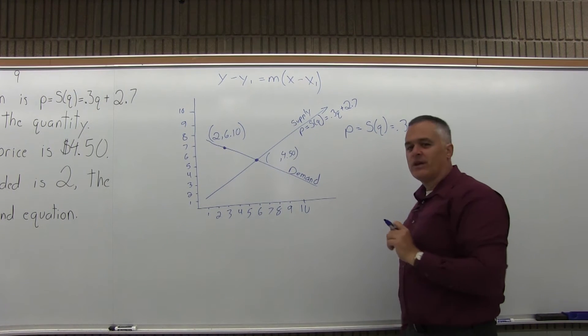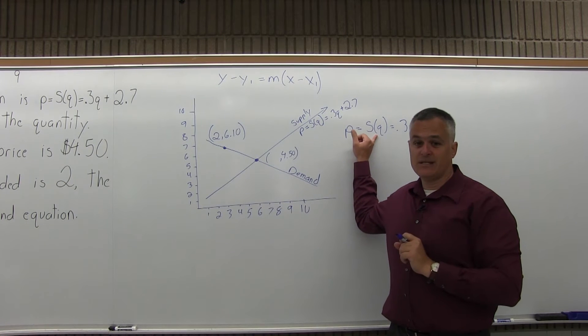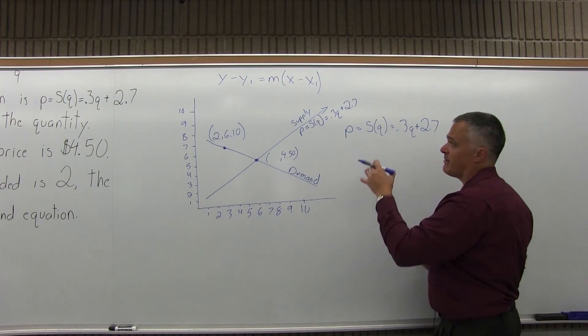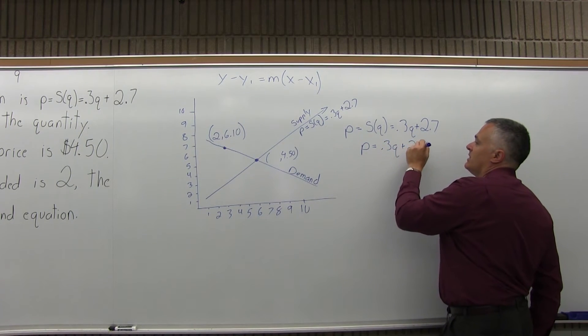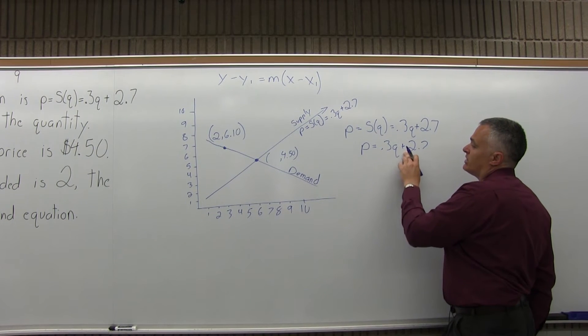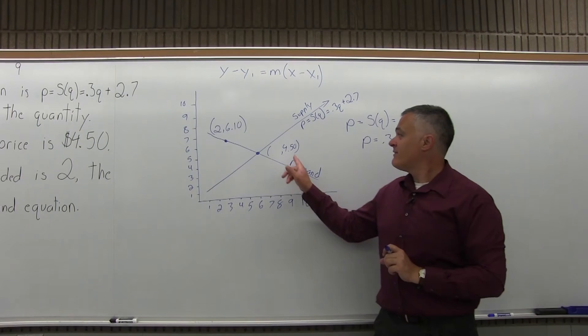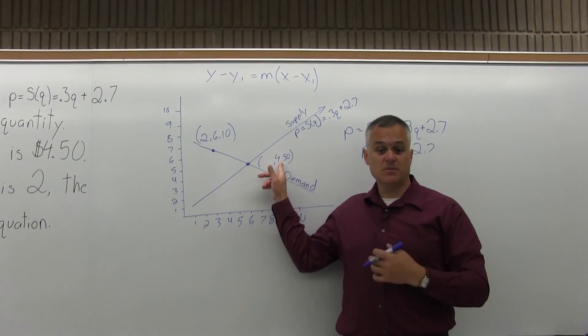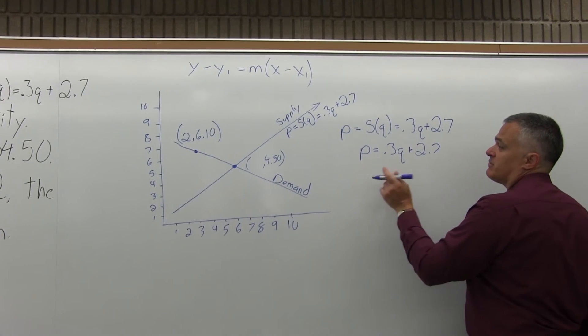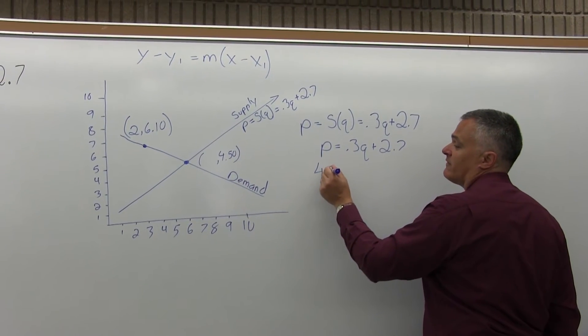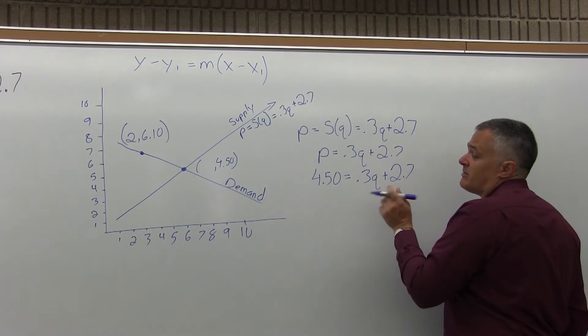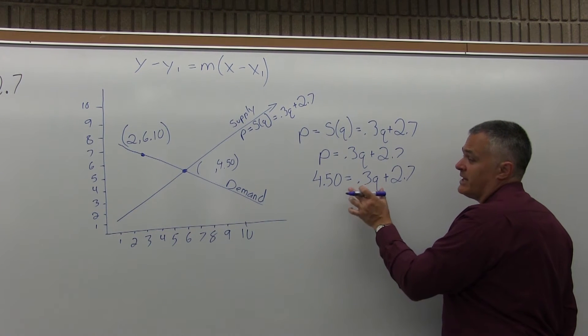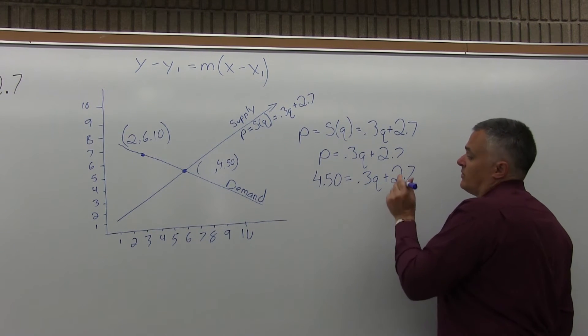When I'm actually going to use it, I prefer to write it with one equal sign: P equals 0.3Q plus 2.7. I have a value for P, $4.50 is P for price. I'm going to put 4.50 for P equals 0.3Q plus 2.7 and solve for Q. Let me move the 2.7, negative 2.7 on both sides.